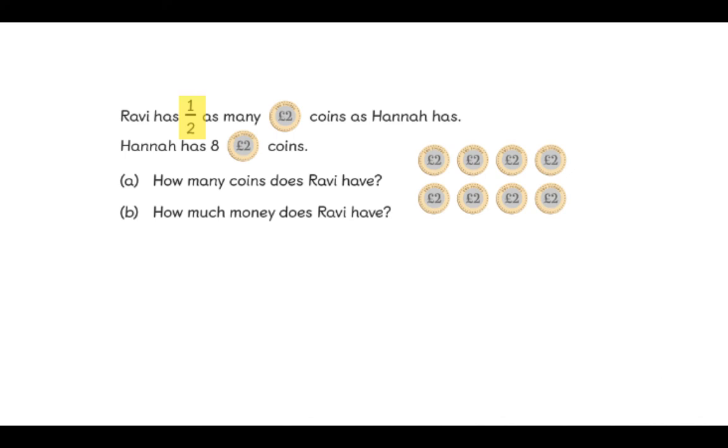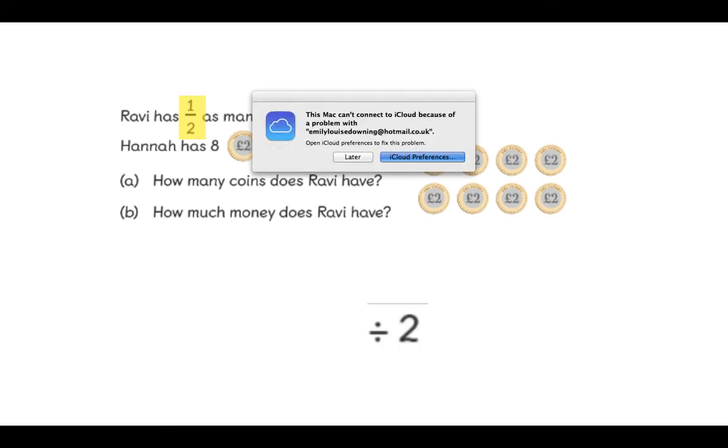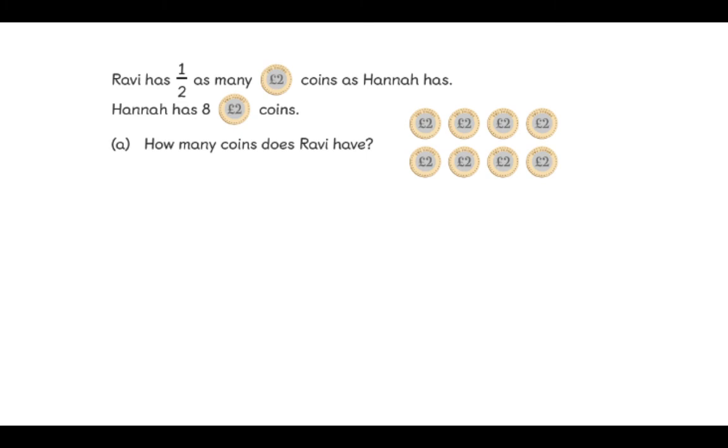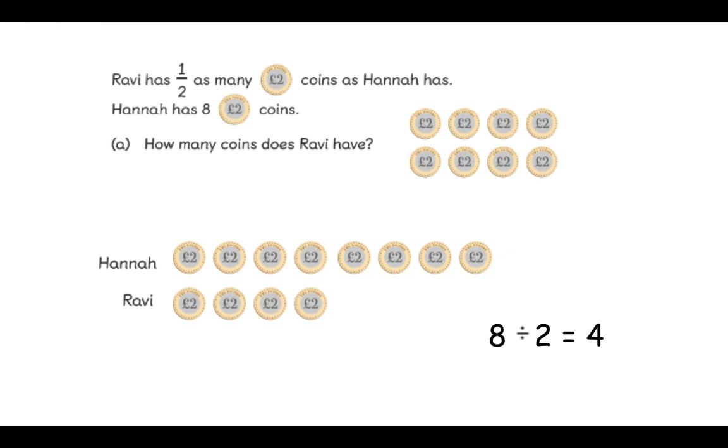Let's have a look at the question together. We know that we are finding half. This means we're going to have to divide by two. Let's start by working out how many coins Ravi has. I'm going to use a bar model. I've got a space for Hannah's coins and I've left a space for Ravi's coins. How many coins did Hannah have? Correct. Hannah had eight coins. We know that Ravi has half as many. And we know that when we're halving, we're dividing by two. So we need to do eight divided by two. Eight split into two equal groups. This will give us four. So I can see that Ravi has four coins.